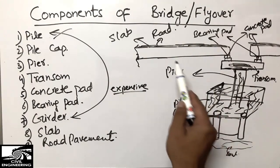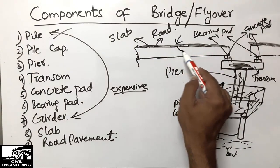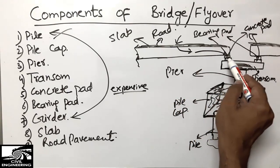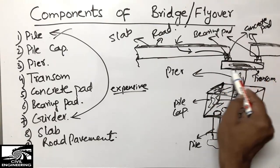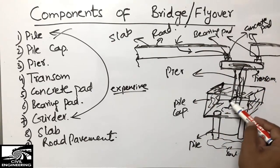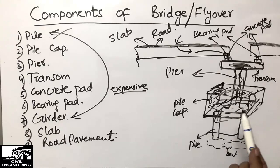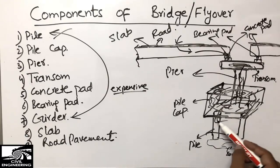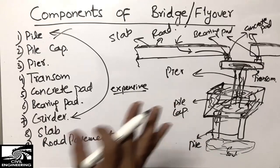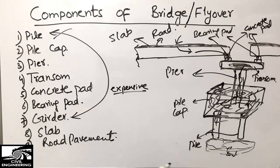The load transfer path is as follows: load from vehicles comes onto the road pavement, transfers to the slab, the slab transfers it to the girder, the girder to the concrete pad and bearing pad. The transom takes the whole traffic load and distributes it to the pier. The pier distributes to the pile cap, and the pile cap distributes to the piles — which may be two or more depending on the design — and finally the piles transfer the load to the soil.